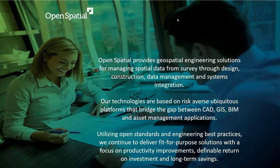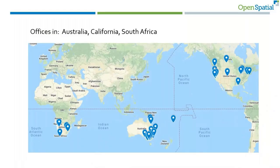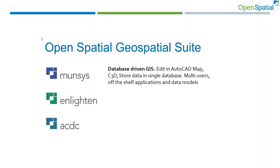We've been using AutoCAD Maps since 1996 — that's when Open Spatial started — and we developed GIS systems on top of an AutoCAD-based platform storing data in the spatial database. We've got offices in Australia, California, and South Africa, so the saying is the sun never sets on the Open Spatial Empire. Our Open Spatial Geospatial Suite consists of three products: ManSys, which is database-driven GIS.